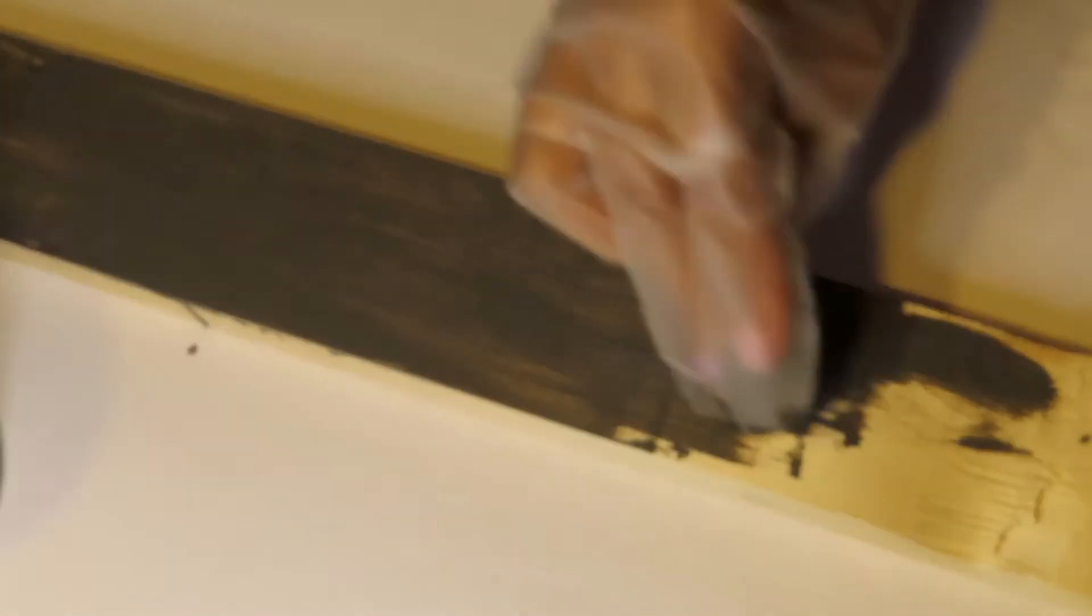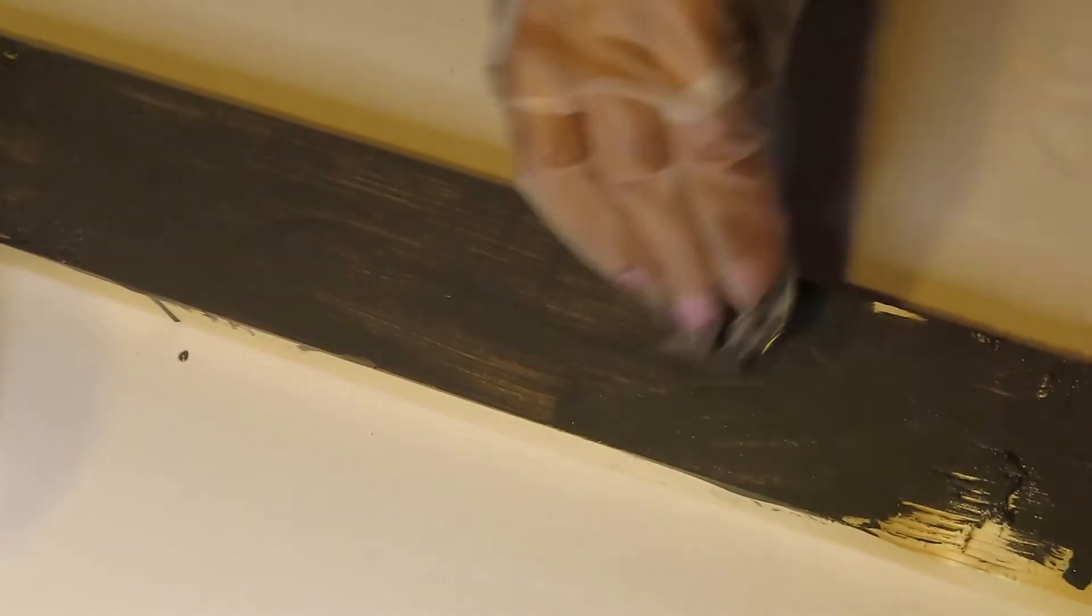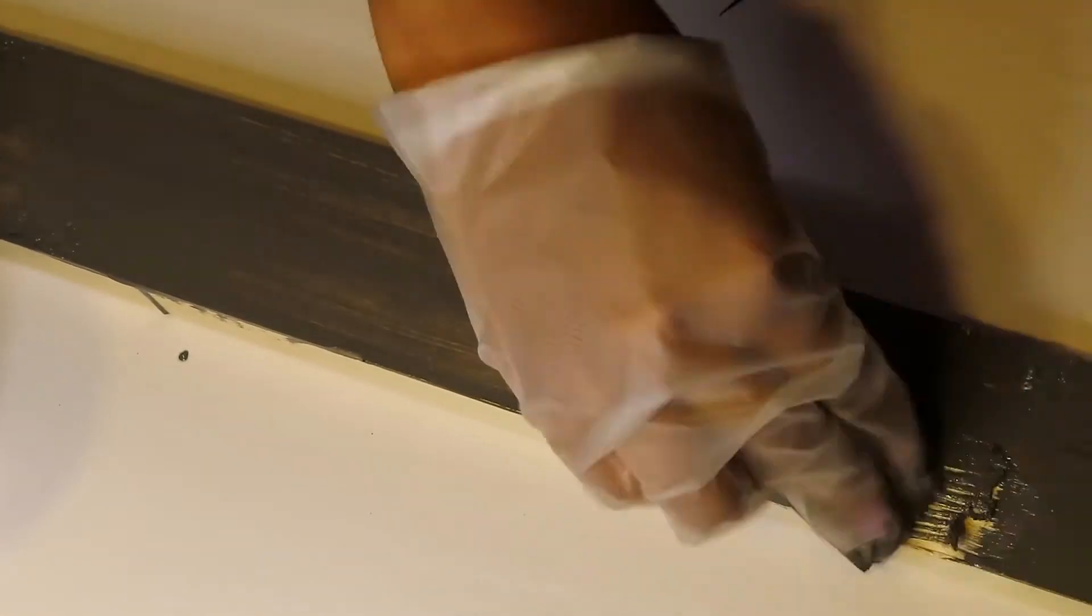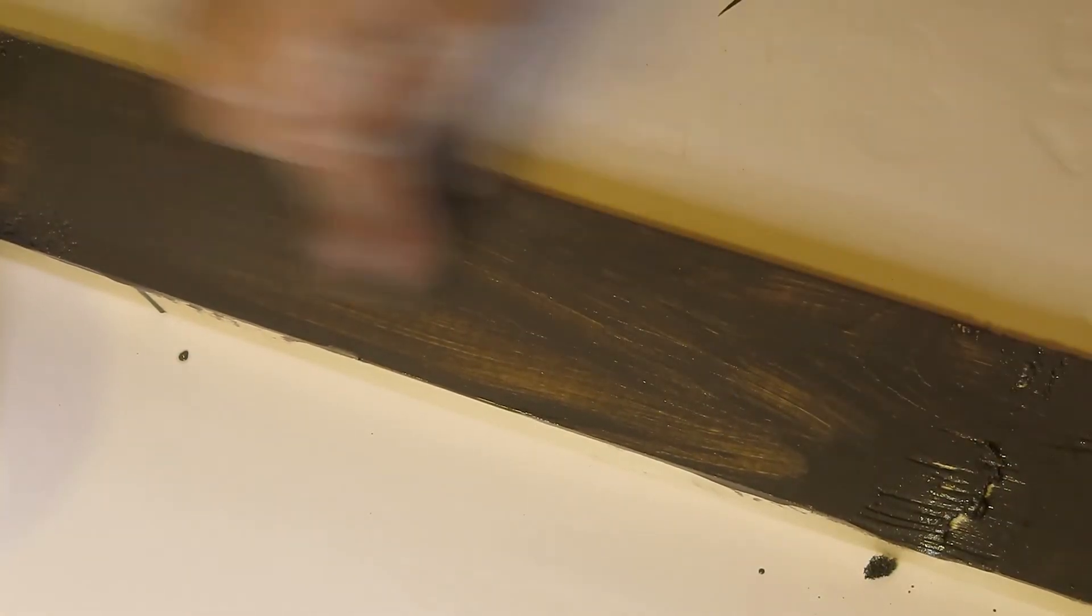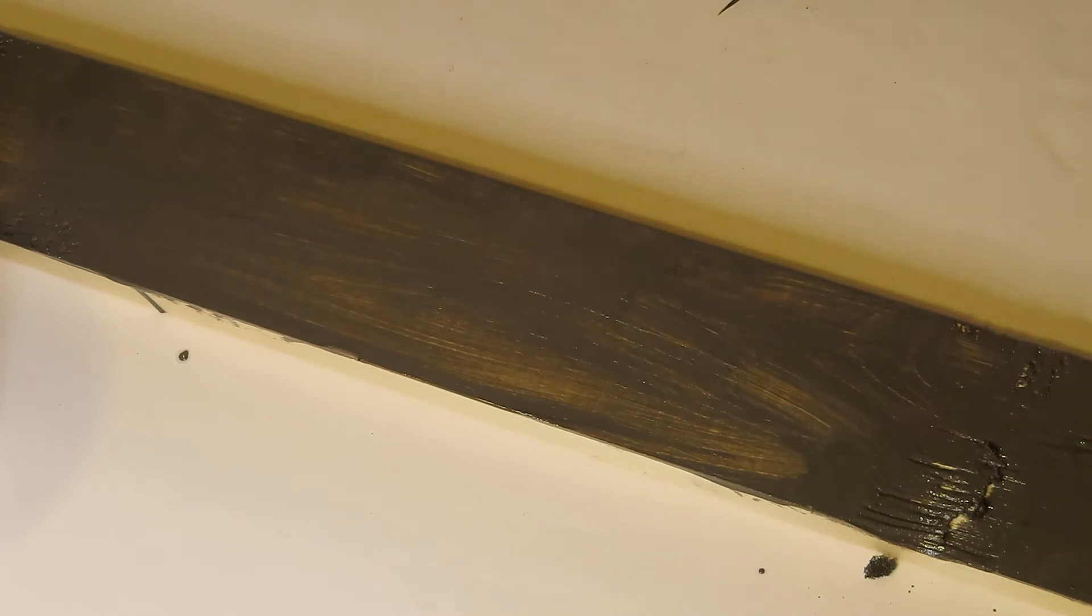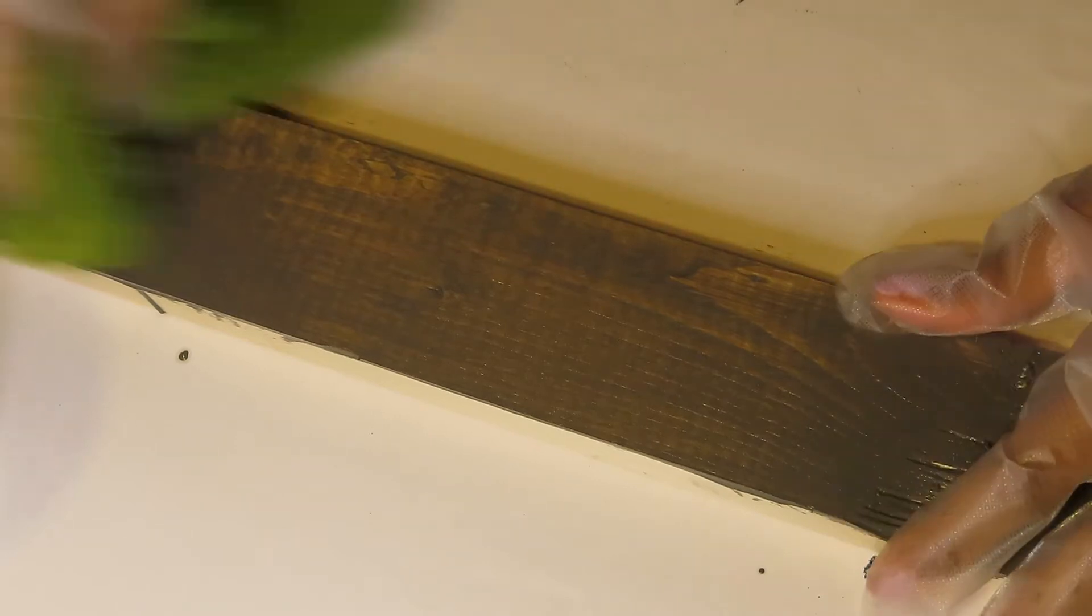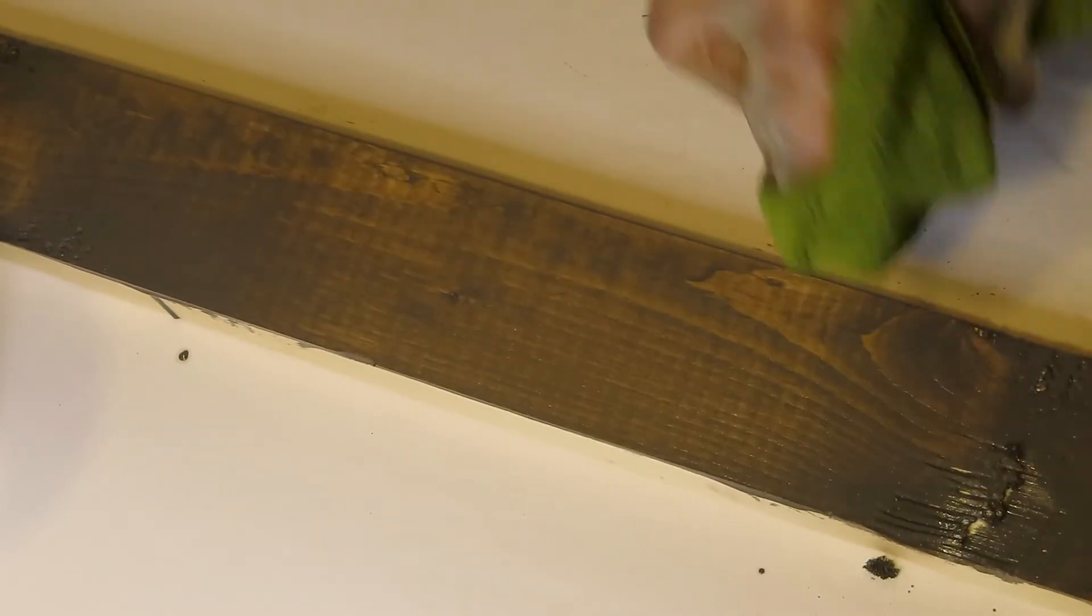To start, what you want to do is just begin to stain the wood to your desired color. In between staining, once I put the first coat, I made sure to wipe it off with a clean cloth.